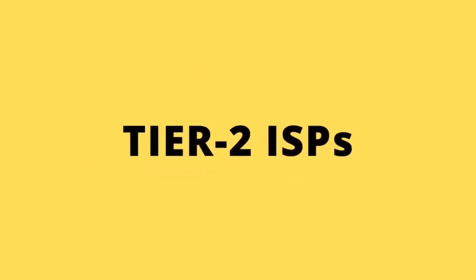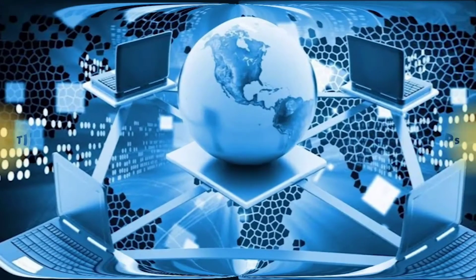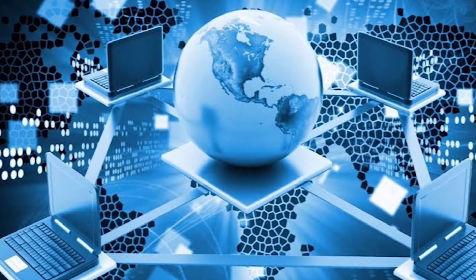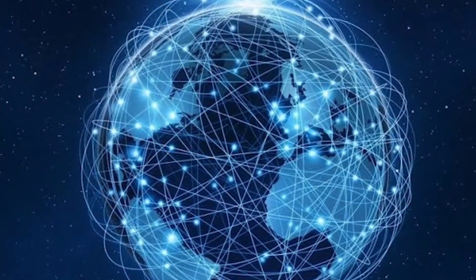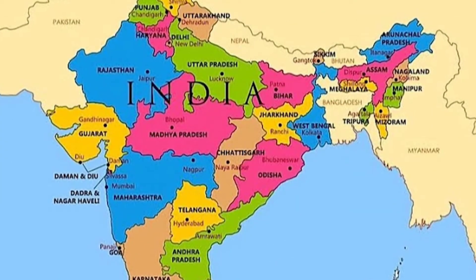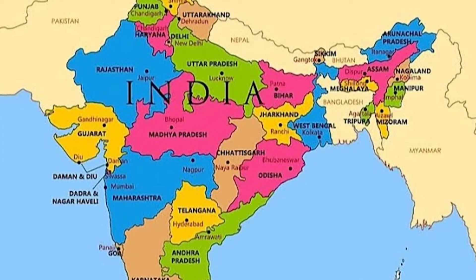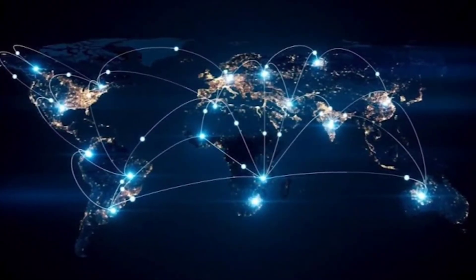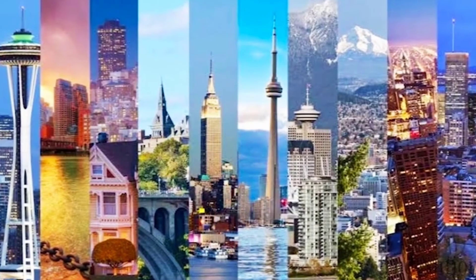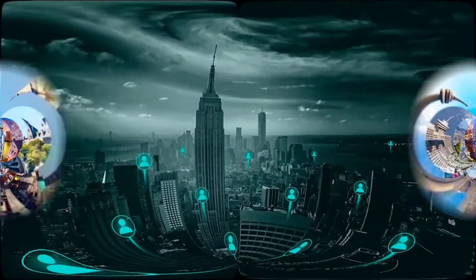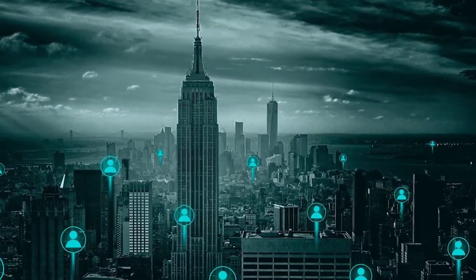The next one, Tier 2 ISPs. These ISPs operate under Tier 1 ISPs, making sure to distribute the network connectivity to the different states of the respective countries in which they operate. So, while Tier 1 ISPs provide internet to different countries of the world, Tier 2 ISPs provide internet to the different states in the country they operate.